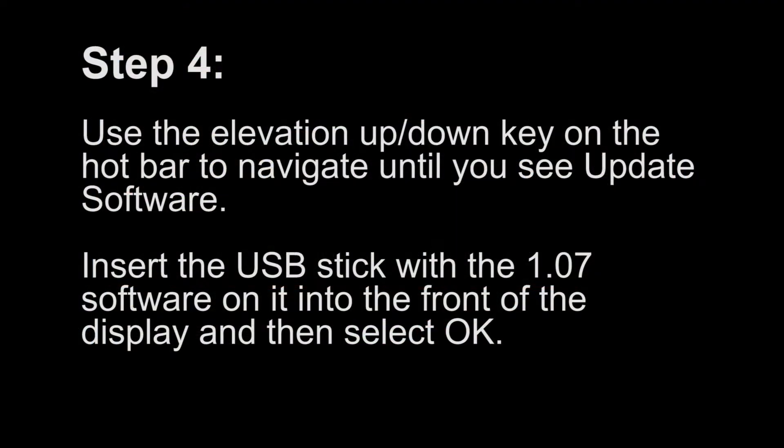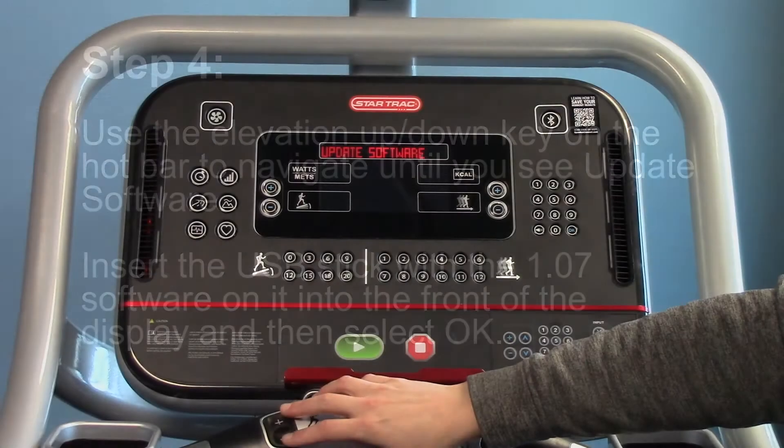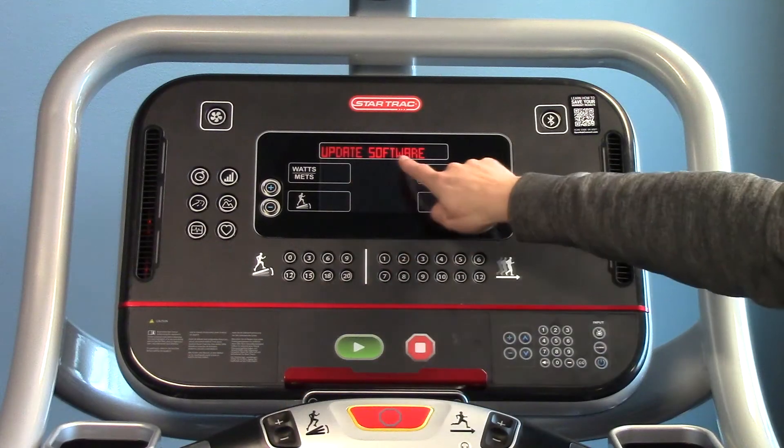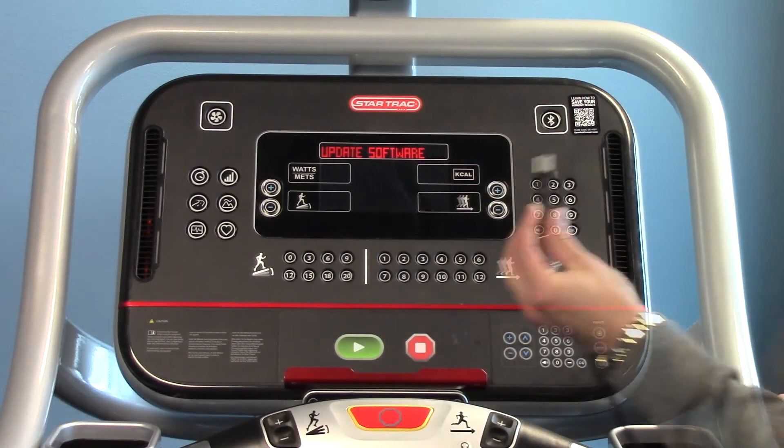Step 4. Use the elevation up or down key on the hotbar to navigate until you see update software. Insert the USB stick with the 1.07 software on it into the front of the display and then select OK.